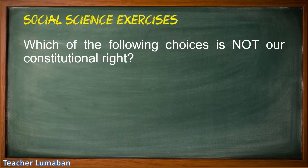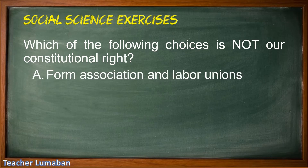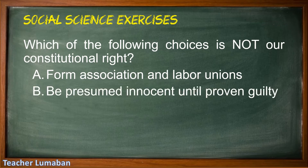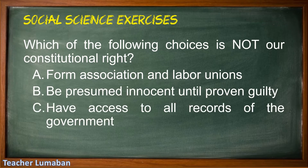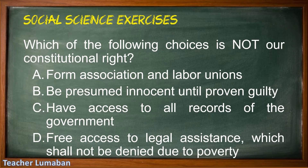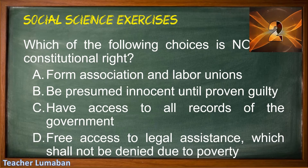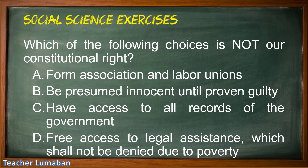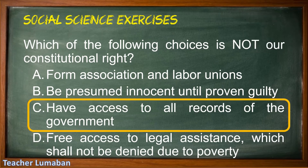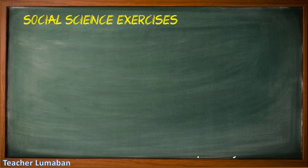Which of the following choices is NOT a constitutional right? Letter A: Form associations and labor unions. Letter B: Be presumed innocent until proven guilty. Letter C: Have access to all records of the government. Letter D: Free access to legal assistance which shall not be denied due to poverty. The correct answer is Letter C: Have access to all records of the government.